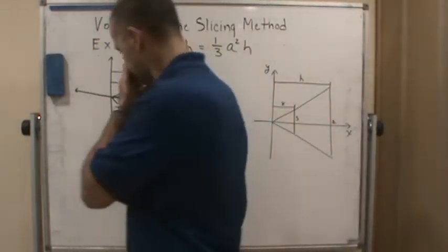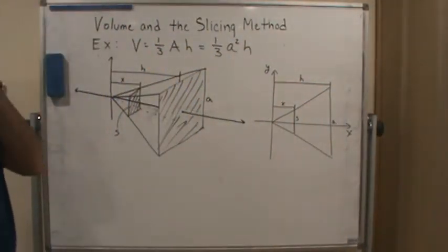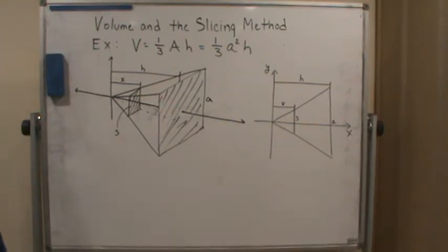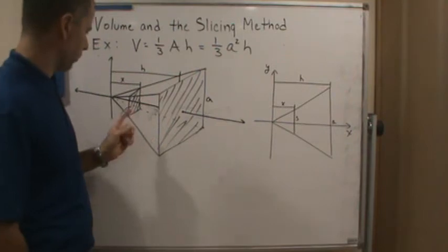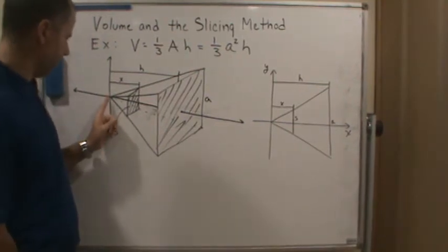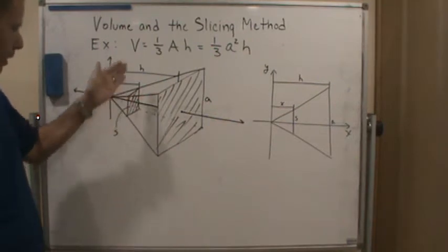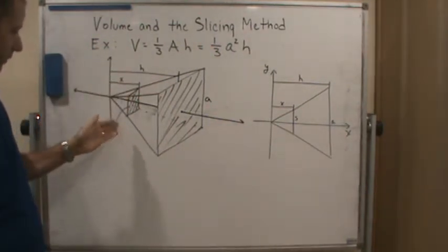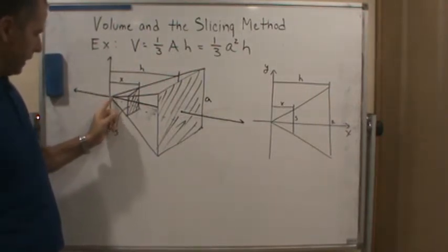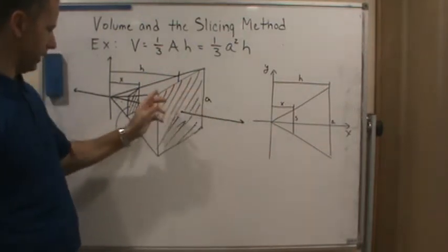So I drew some diagrams and pictures. Bear with me with my drawings. But here's a three-dimensional view. I have the point here, and I have the pyramid on its side because I want the slices to be perpendicular to the x-axis. So the way I have it is it comes out here, and the base is this piece right here.